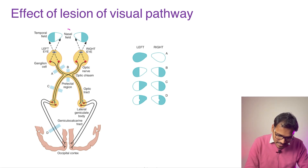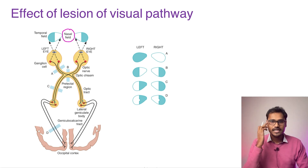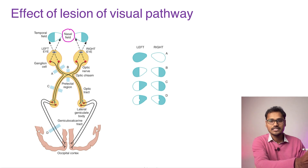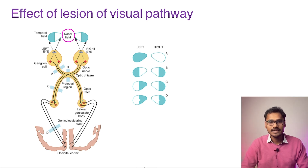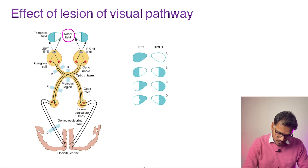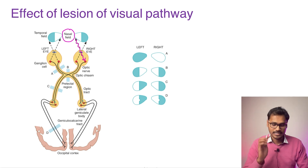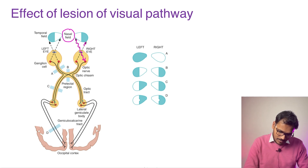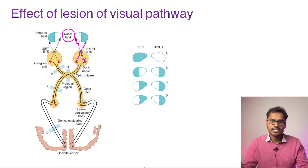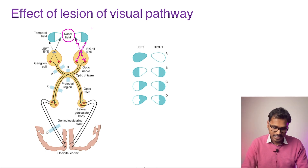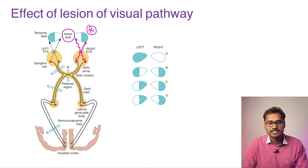For example, in the right eye: the nasal field of vision falls onto the temporal part of the retina, and the temporal field of vision falls onto the nasal retina — because light rays cross through the lens. So the nasal field projects to the temporal retina, and the temporal field projects to the nasal retina. But we always represent defects against the field, since that is what the patient cannot see.